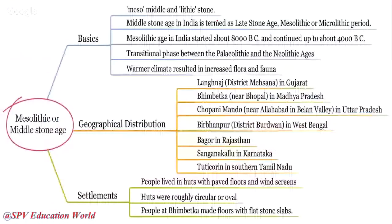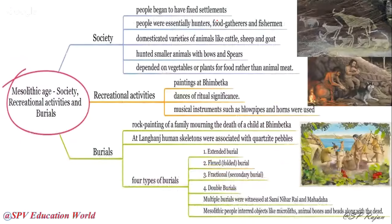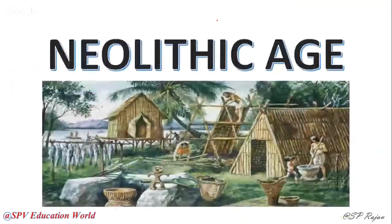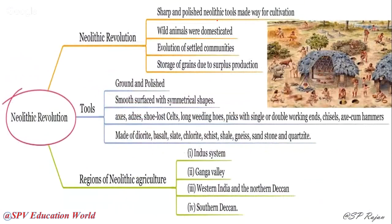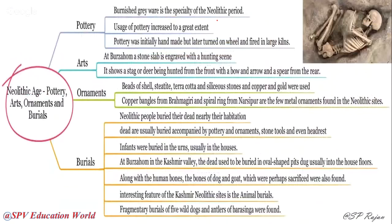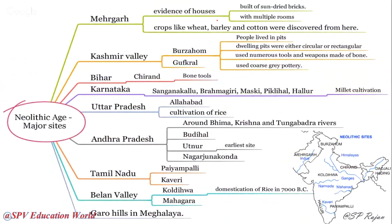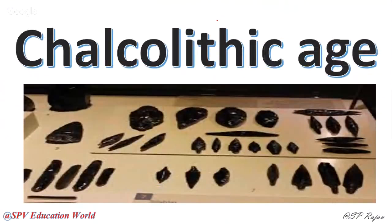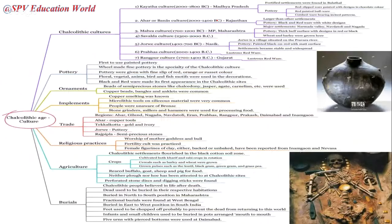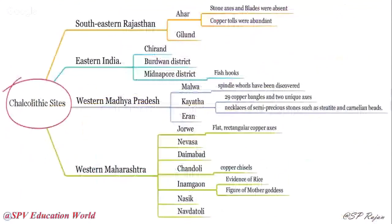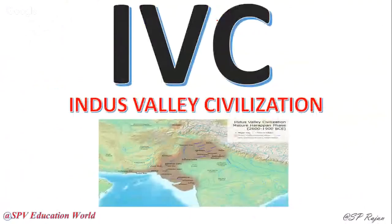Mesolithic is a transition zone between Paleolithic and Neolithic, with pottery, arts, and domestication of animals. Neolithic age is the New Stone Age — basic settlements, Neolithic revolution, agriculture, potteries, arts, ornaments, and burials, with major evidence sites covered. We also saw the Chalcolithic age — copper plus stone age — covering social basics, livelihood, settlements, ornaments, religious practices, agriculture, and burials.